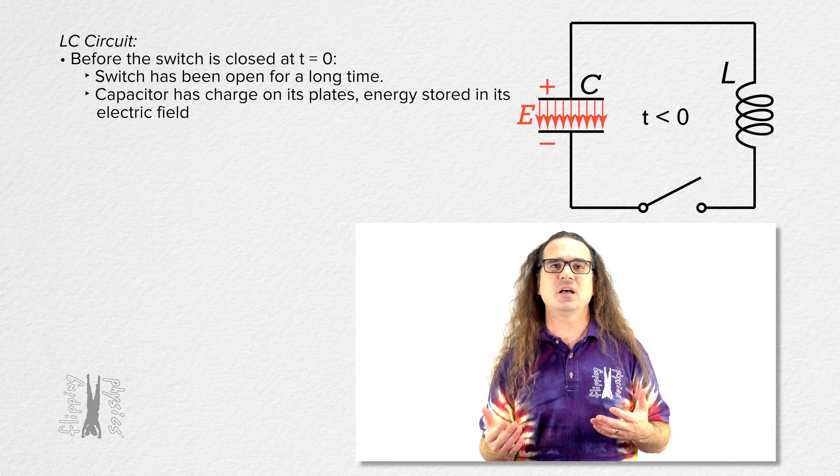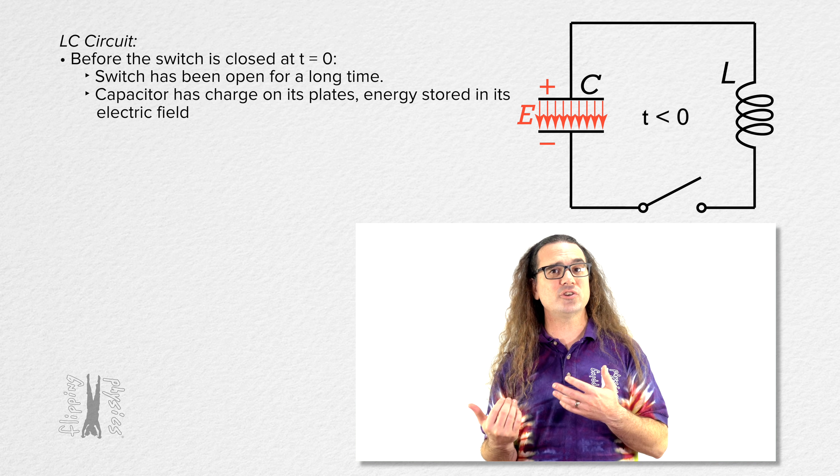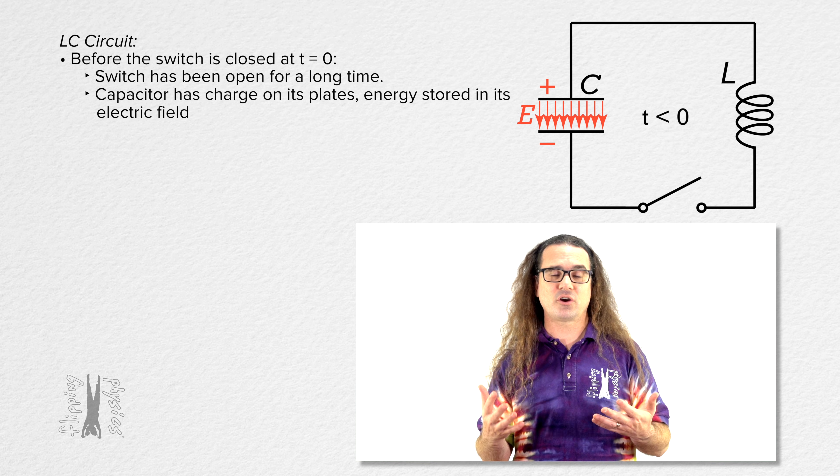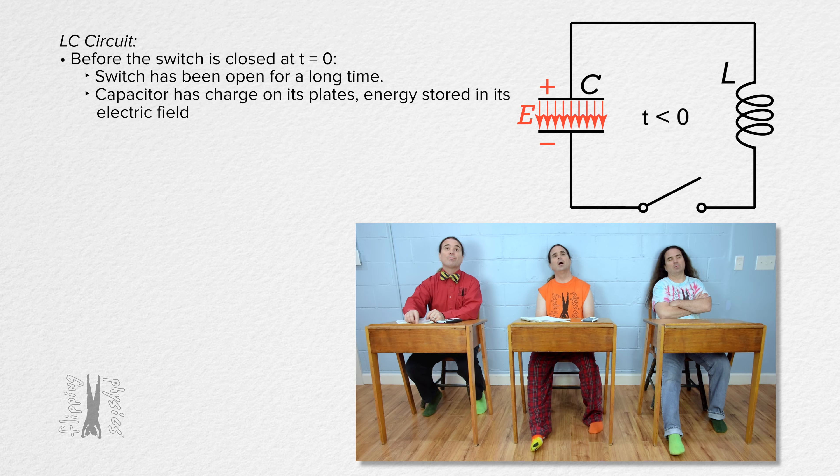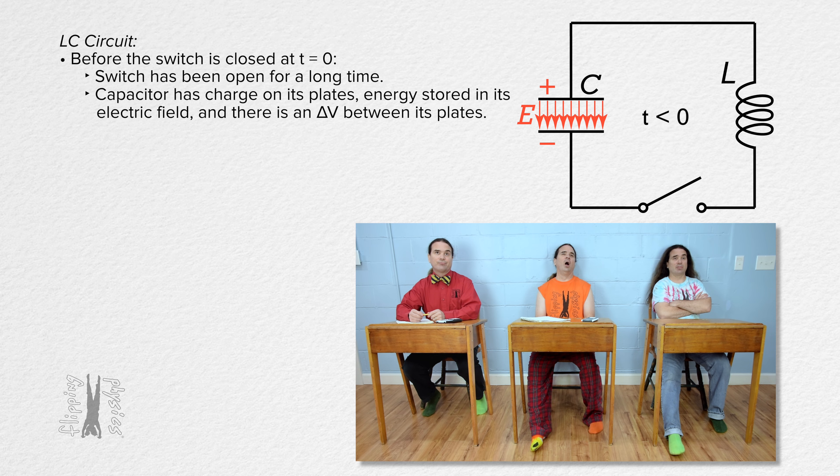Bo, tell me what we know about the initial current in the circuit, the current at time zero. Well, the switch has been open for a while before the switch is closed, and there is an electric potential difference between the plates of the capacitor. So before the switch is closed, the current in the open circuit is zero.